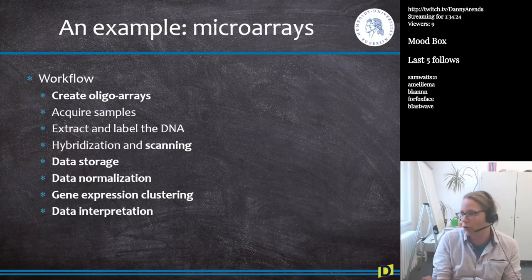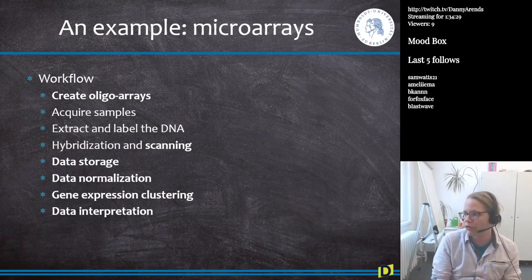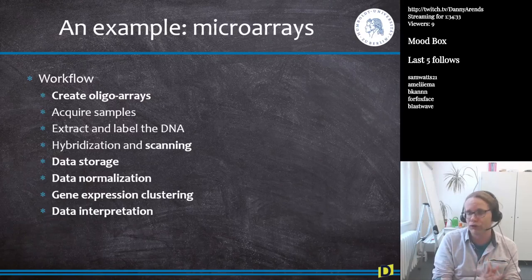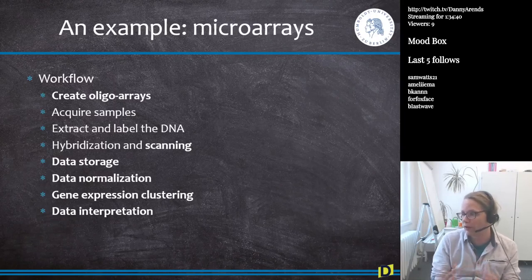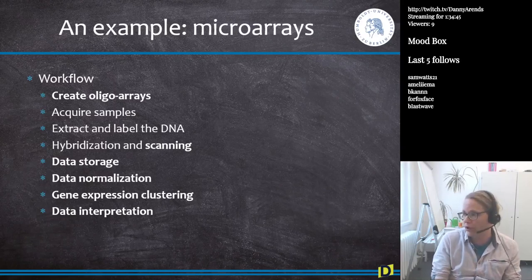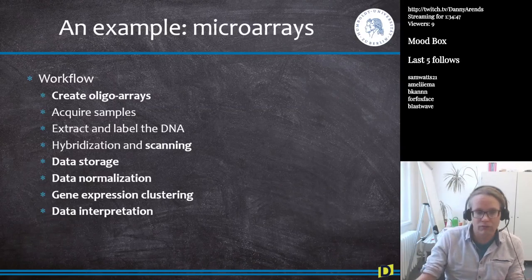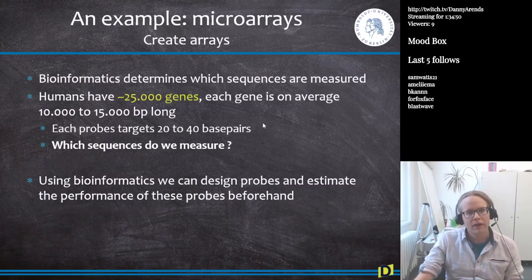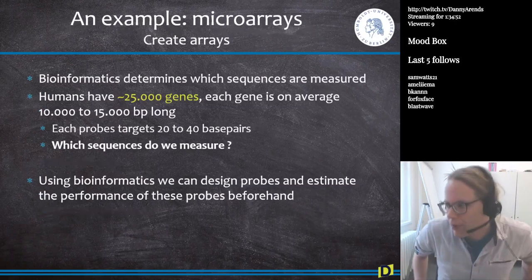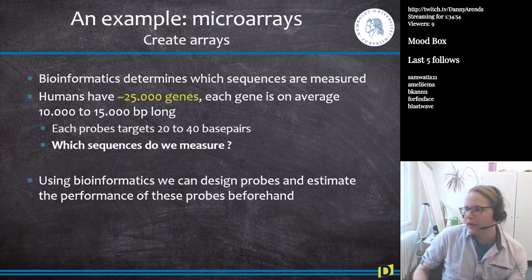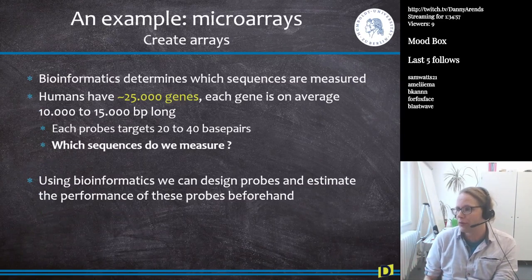The next step is data interpretation. Bioinformatics is responsible for searching through all available literature using automated literature scanning to see how our data fits into all knowledge collected over the last decades. So, step by step: creating the arrays — a bioinformatician determines which sequences are measured. Humans have around 25,000 genes, a little more than was determined in the Human Genome Project, because we now know there are also genes that do not code for proteins but for things like microRNAs or other biologically active RNAs.